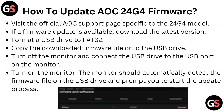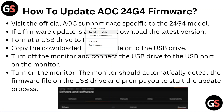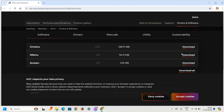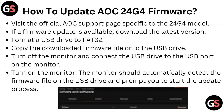How to update AOC 24G4 firmware? Visit the official AOC support page specific to the 24G4 model. If a firmware update is available, download the latest version. Format a USB drive to FAT32. Copy the downloaded firmware file onto the USB drive.